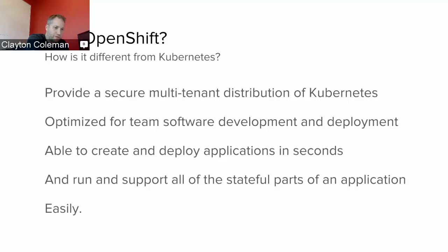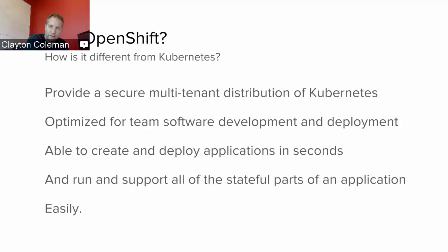A question I get asked a lot is how is OpenShift different than Kubernetes? Kubernetes is a container orchestration engine — a great place to run applications. With OpenShift, our goal was to take the next step: not just have a great place to run applications, but a place that supports running many, many applications, as well as the teams and operational necessities so your applications keep running. We provide a secure multi-tenant distribution of Kubernetes.